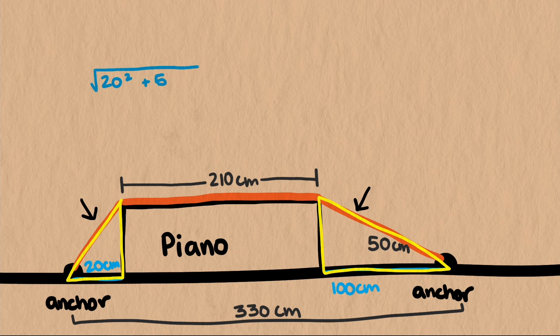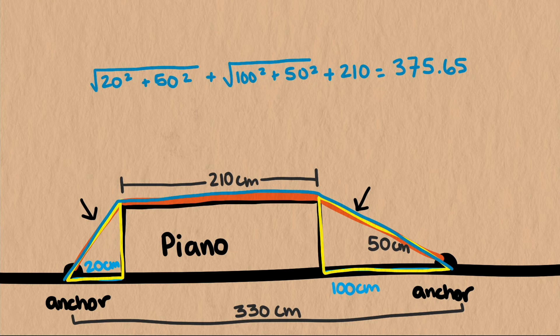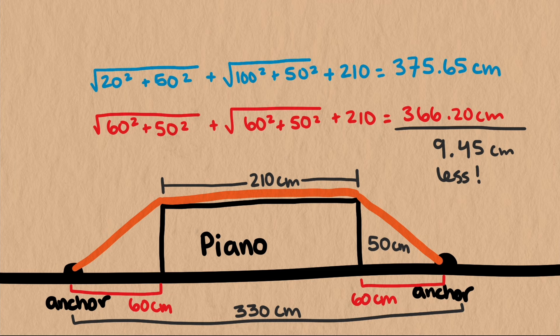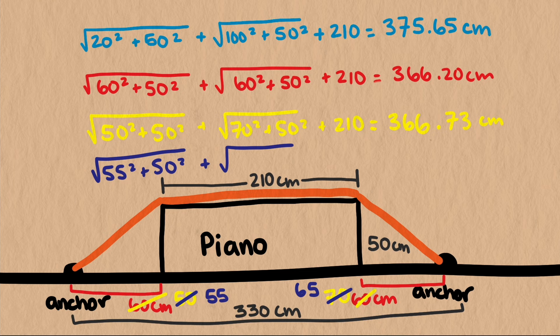For the off-center case, we get a total length of 375.65 centimeters. And for the center case, we get 366.2 centimeters. Not the same. It takes about 9 centimeters less of strap for the center case, which is about 4 inches. We could pick a few other off-center values and do the same calculation, and it looks like putting the piano in the very center is the spot that minimizes the length of the strap.